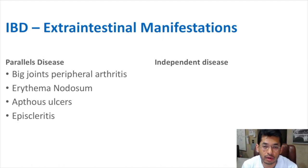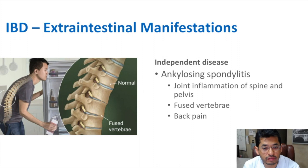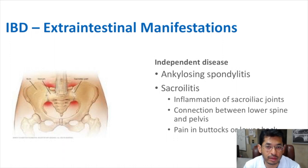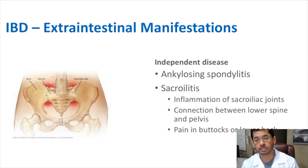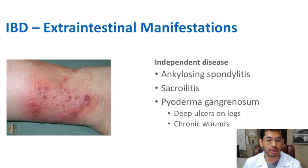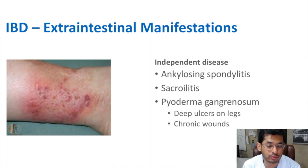Then you have manifestations that don't parallel the disease course. One of these is ankylosing spondylitis, where you have joint inflammation of the spine and pelvis in which the vertebrae are fused together, becoming almost like a bamboo spine, and patients often present with back pain. You can also have sacroiliitis, inflammation in the joints between the sacrum and ilium at the hips, presenting as pain in the buttocks or lower back. These can be extra intestinal manifestations of either Crohn's or ulcerative colitis. Another skin lesion is pyoderma gangrenosum, which are deep ulcers in the leg that can develop into chronic wounds — unlike erythema nodosum, this does not parallel the disease process.